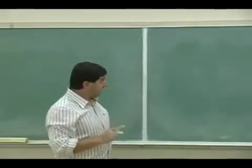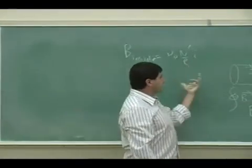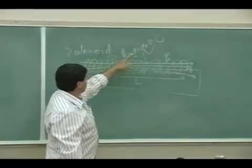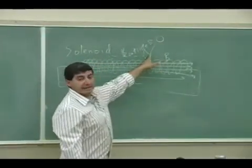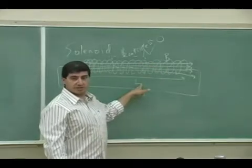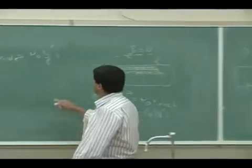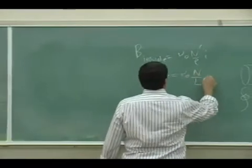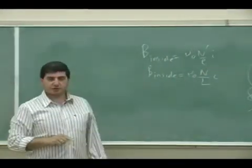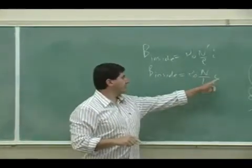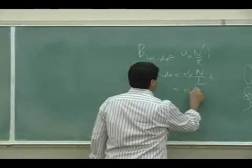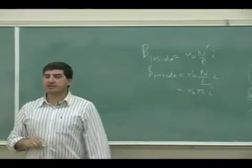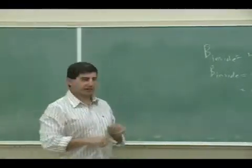Now N′ over L is the turn density ratio. If the coil is uniformly wrapped, it's the same as the total number of turns N divided by the total length L of the solenoid. So B inside equals μ₀ N over L times I. This is often written as μ₀ n I, where little n is the number of turns divided by the length of the solenoid.